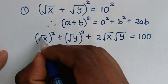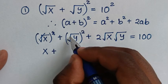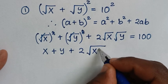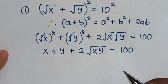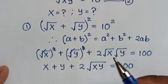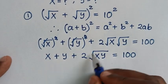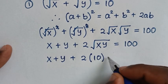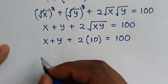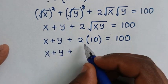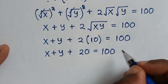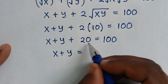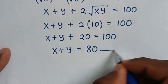Simplifying: √x squared cancels to x, and √y squared cancels to y, giving x + y + 2√(xy) = 100. From equation 2, √(xy) = 10, so we substitute 10 in: x + y + 2(10) = 100, which gives x + y + 20 = 100. Therefore x + y = 80. We'll call this equation 3.